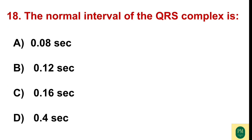The normal interval of the QRS complex is: Option A: 0.08 sec. Option B: 0.12 sec. Option C: 0.16 sec. Option D: 0.4 sec. The correct option is Option A — 0.08 sec.